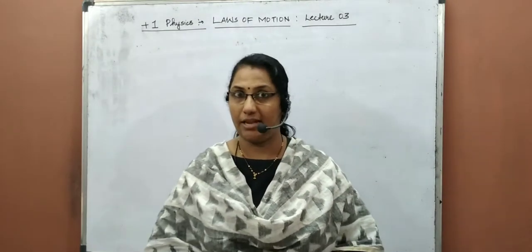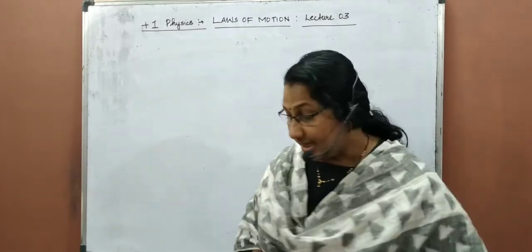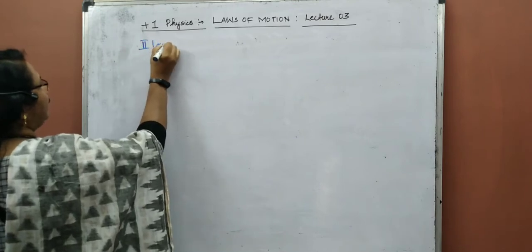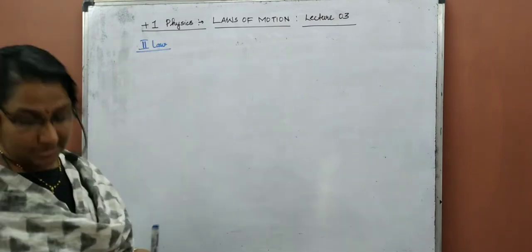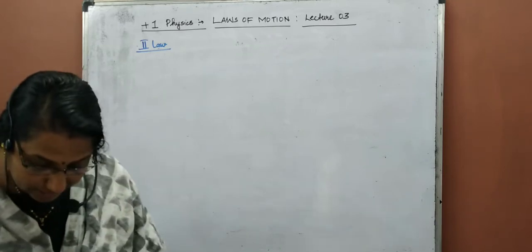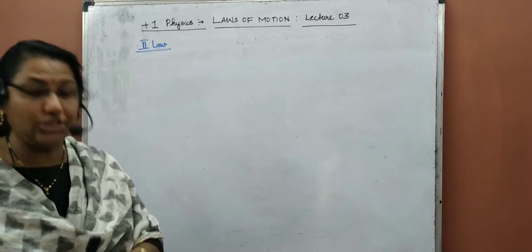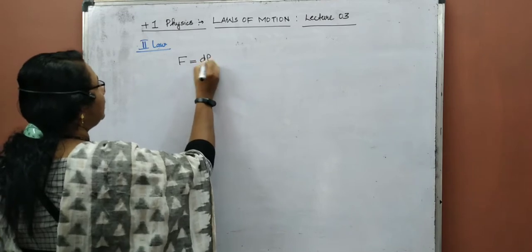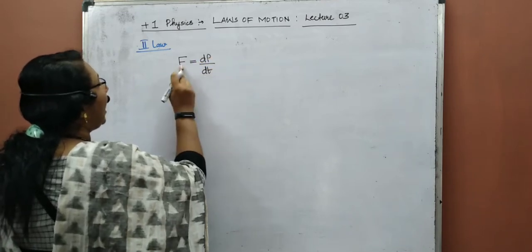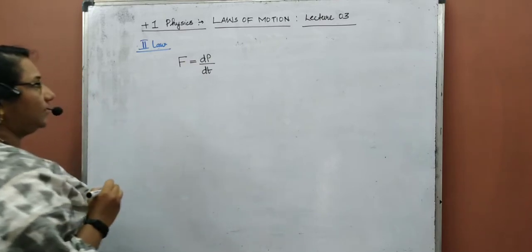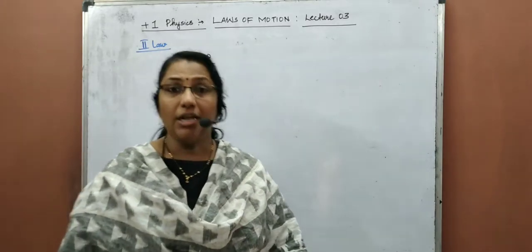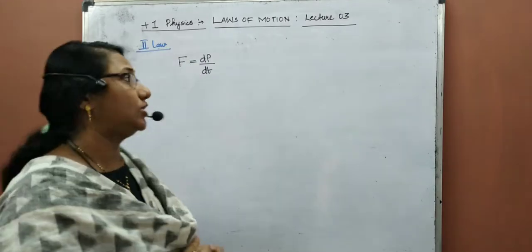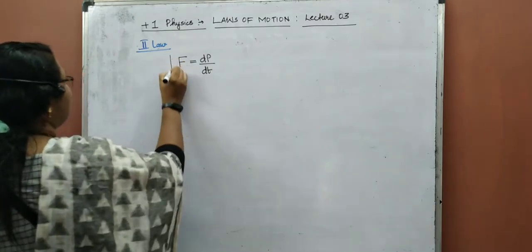We have completed the first law, the second law, and the third law. In the second law, we stated that the rate of change of momentum is directly proportional to the applied external force, and takes place in the direction of the external force. The constant in SI system equals 1, so the equation becomes F equals dP by dt.